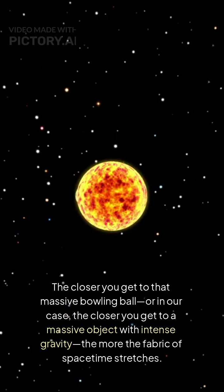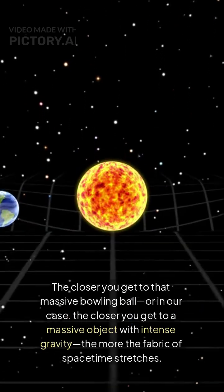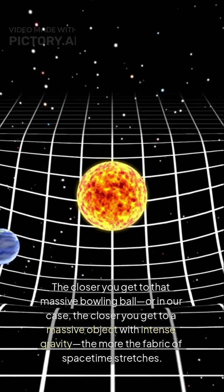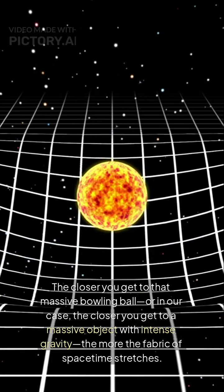The closer you get to that massive bowling ball, or in our case, the closer you get to a massive object with intense gravity, the more the fabric of spacetime stretches. This stretching of spacetime is what causes time to slow down. It's called time dilation.